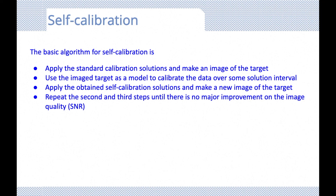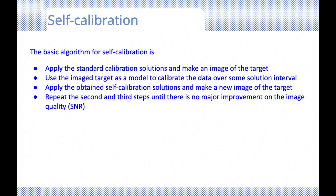In general, by applying this self-calibration step, we do actually improve the RMS noise of our final images. In summary, there are many effects — including the atmosphere, delay errors, and our receiver system electronics — that work to corrupt our signal from our science target. Since our science goals will be affected if the observation data cannot be properly calibrated, we put a lot of effort into standard and more modern calibration techniques to acquire calibration solutions which we then transfer onto our target.